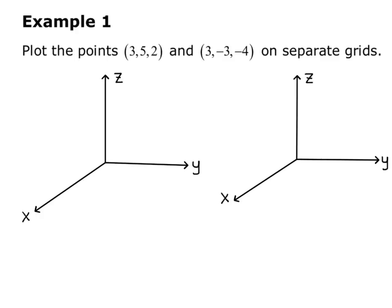So focusing on the first point, 3, 5, 2, I want to come out 3 in the x-direction, so I come out along the x-axis, 3. I want to go 5 in the y-direction, so I mark off 5 on the y-axis, and I use those points to make a rectangle in the x-y plane. So that, the corner of that rectangle is the point 3, 5, 0, because I haven't gone anywhere in the z-direction yet.